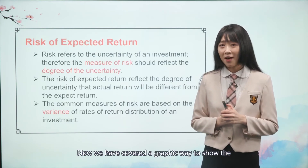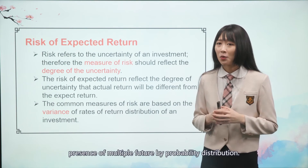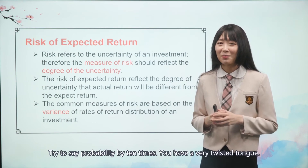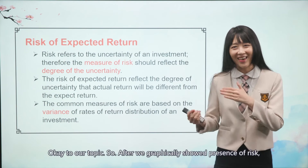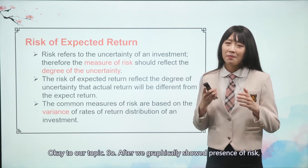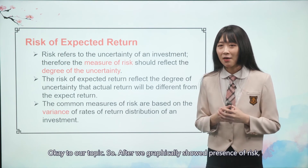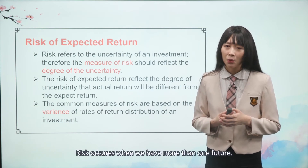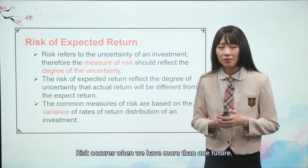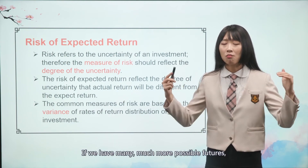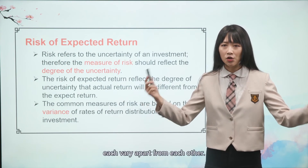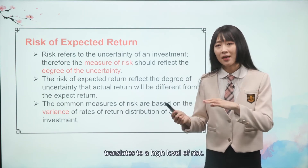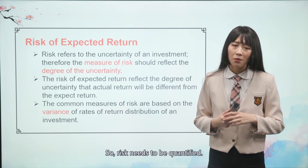We have covered a graphic way to show the presence of multiple futures using probability distributions. After graphically showing the presence of risk, let's conclude a theoretical definition: risk occurs when we have more than one future. If we have many possible futures, each varying apart from each other, then we have a high level of uncertainty that translates to a high level of risk.